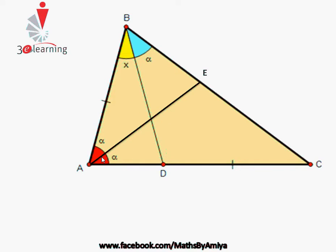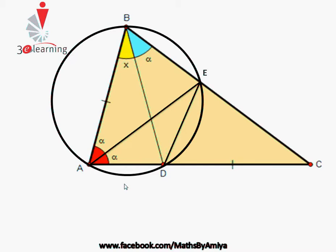By bisecting angle A, can you identify that ABED is a cyclic quadrilateral? DE is a line, and from that line DE we are making angle α at A and angle α at B. So DE is nothing but a chord of a circle, and B and A are points on the perimeter. Since DE makes angle α at A and angle α at B, ABED is a cyclic quadrilateral.